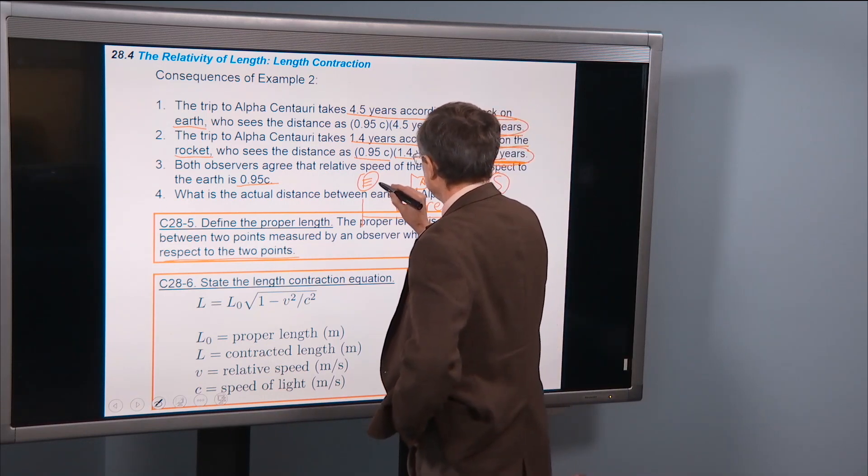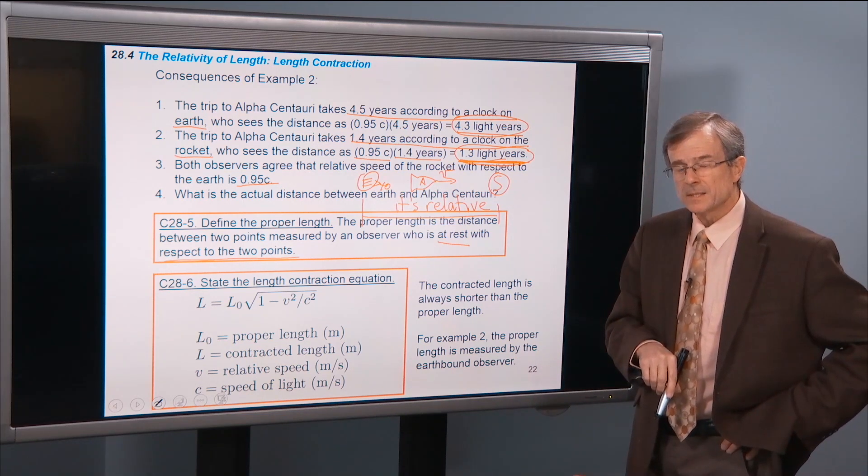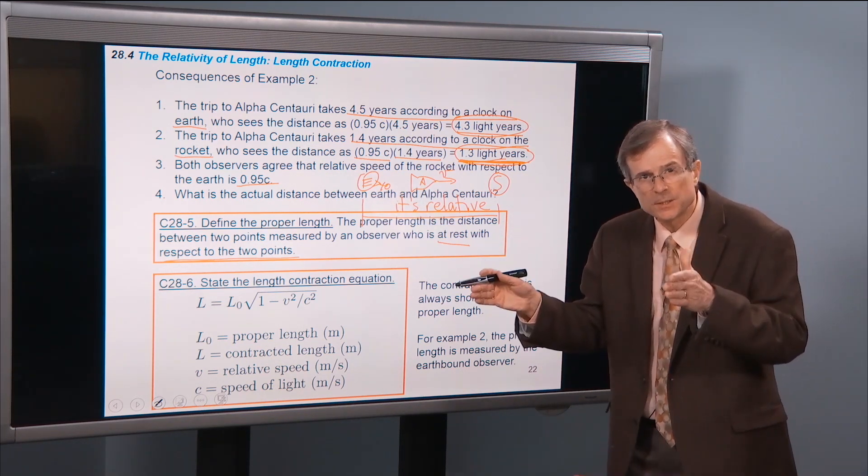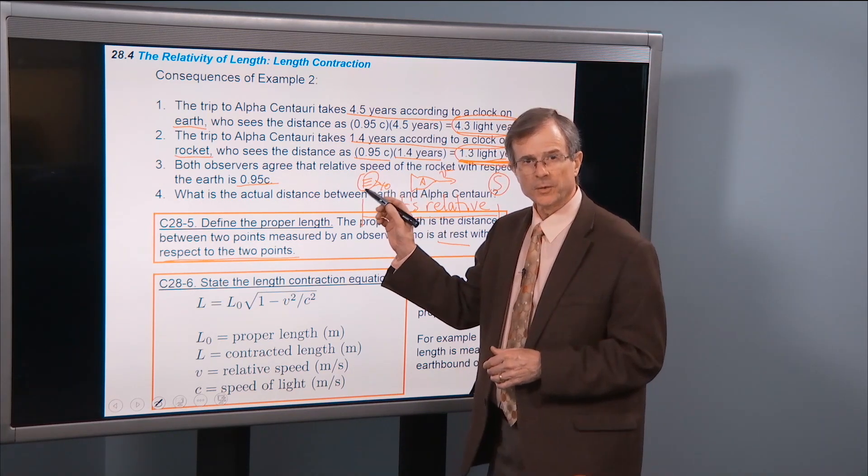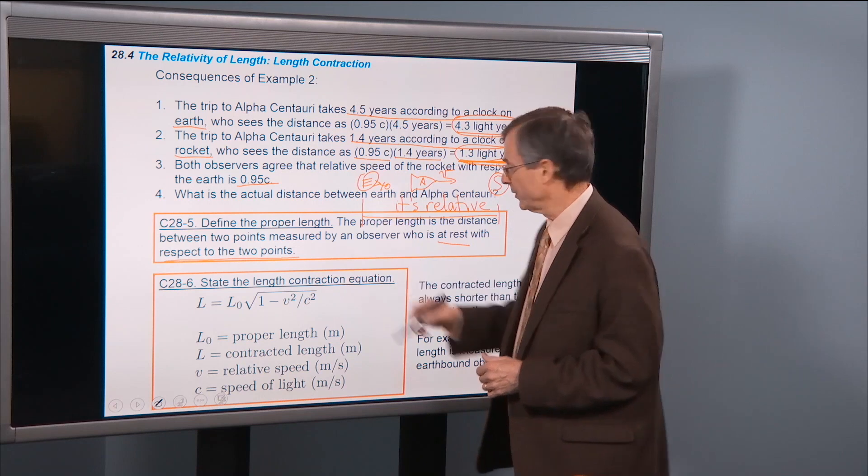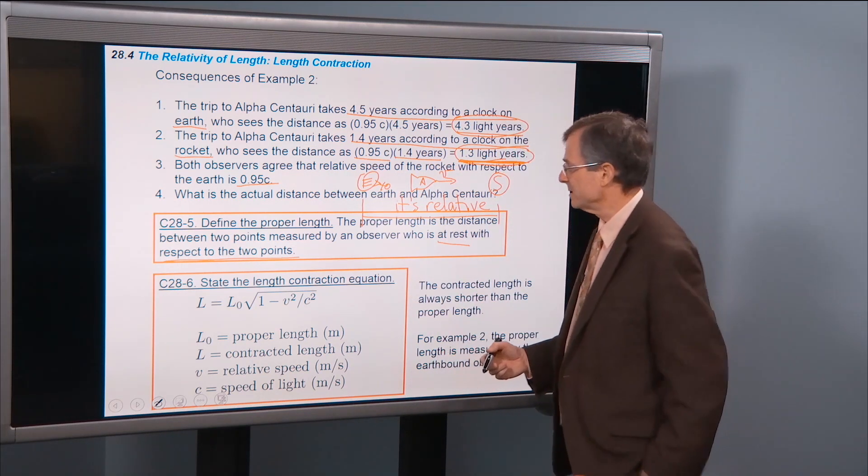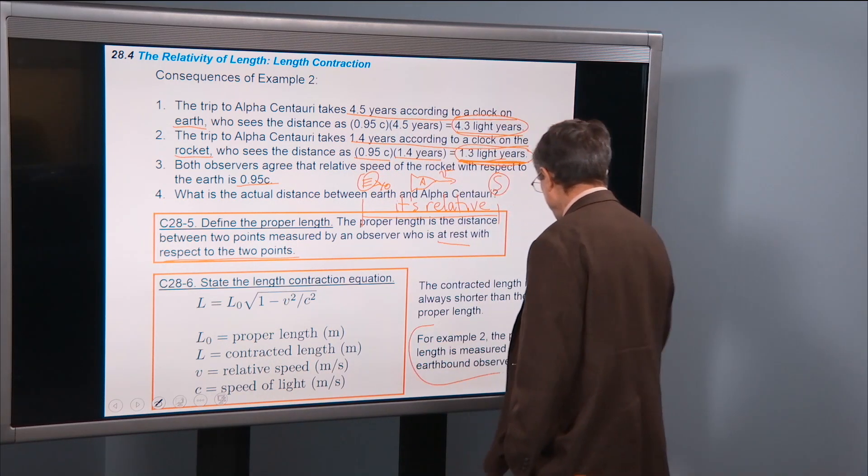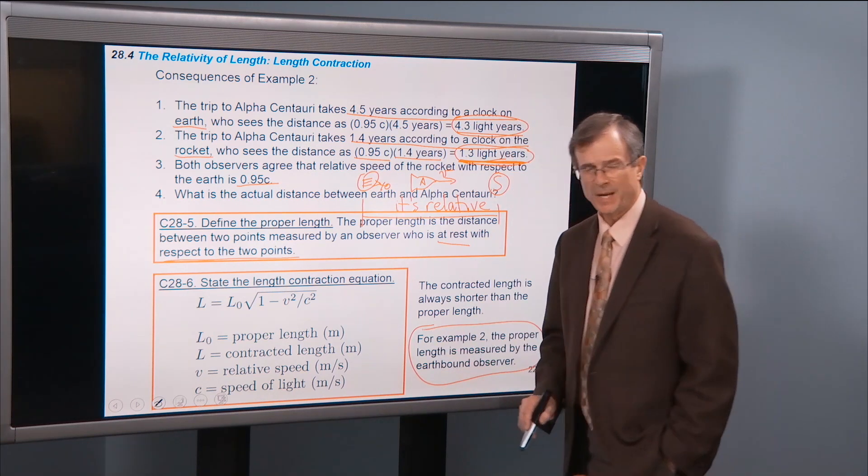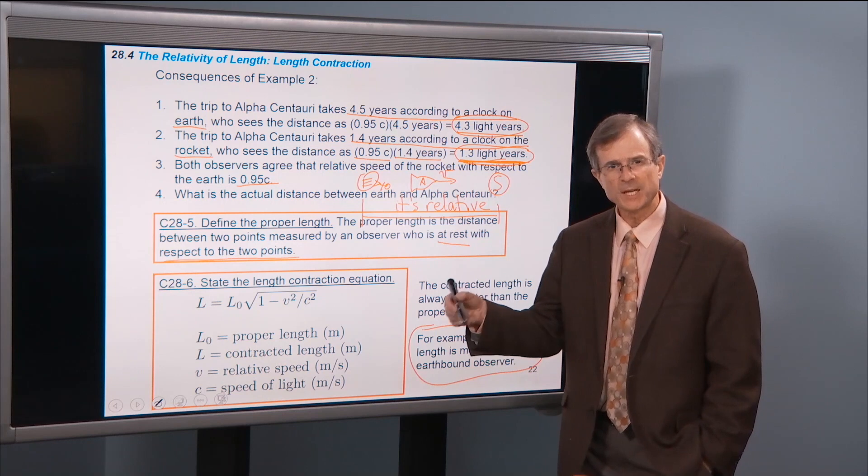What about that Earth-bound observer? Is he at rest with respect to the two points we're trying to find the distance for? Yes. He's sitting on the Earth, so he's at rest with respect to the Earth. That star is a distance 4.3 light years away. He's at rest with respect to both places. So in this case, the proper length is measured by the Earth-bound observer because he is at rest with respect to the two endpoints.